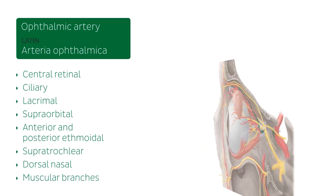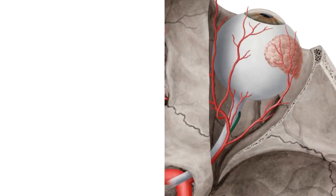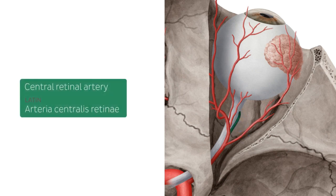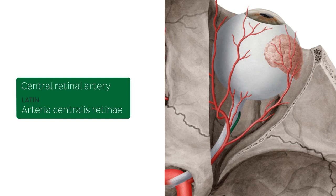Let's start off with the very first one here on the list. From a superior view, we see here this highlighted tiny structure. This one is the central retinal artery, which is a branch of the ophthalmic artery running inferior to the optic nerve within its dural sheath to then the eyeball.